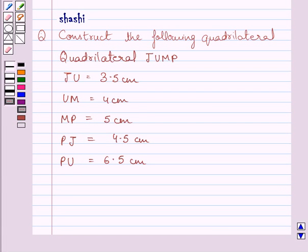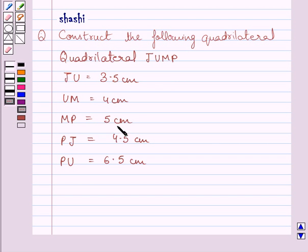Hi and welcome to the session. Let us discuss the following question. Construct the following quadrilateral. We have to construct a quadrilateral JUMP in which JU is equal to 3.5 cm, UN is equal to 4 cm, MP is equal to 5 cm, PJ is equal to 4.5 cm, and PU is equal to 6.5 cm.